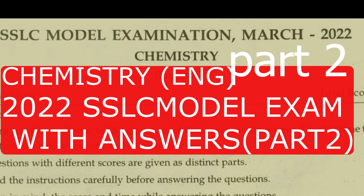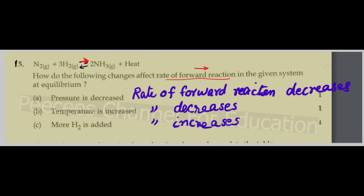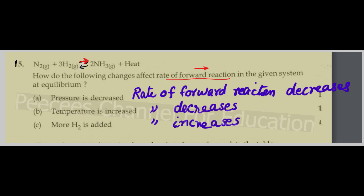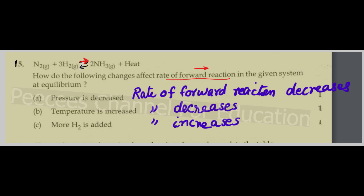SSL C.M.O.T.L.E.X.M. 2022 Chemistry 2nd part, question 15 module on this video. 15th question: Nitrogen plus hydrogen gives NH₃ ammonia. How do the following changes affect the rate of forward reaction in the given system at equilibrium?